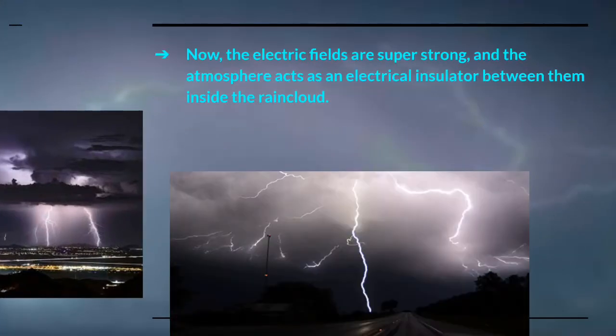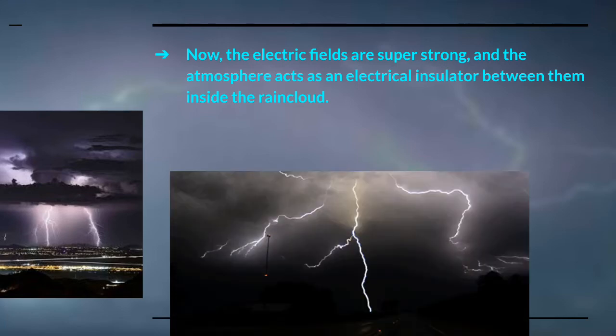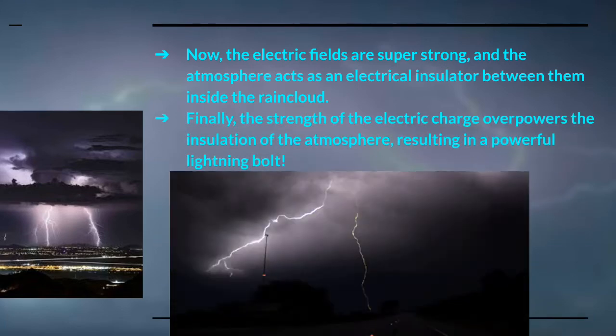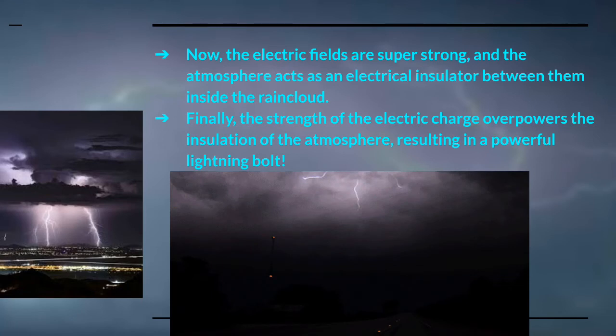Now, the electric fields are super strong and the atmosphere acts as an electrical insulator between them and the cloud. Finally, the strength of the electric charge overpowers the insulation of the atmosphere, resulting in a powerful lightning bolt.